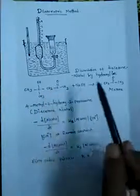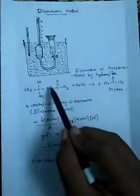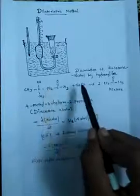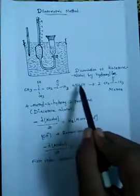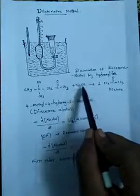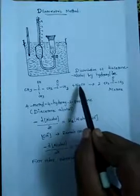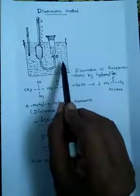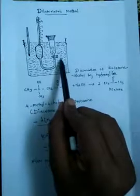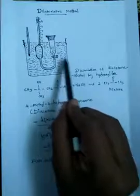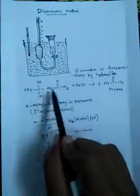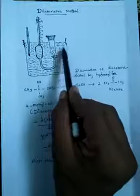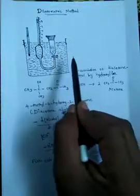We usually take about 100 ml of sodium ethoxide and 5 ml of diacetone alcohol. To perform this experiment, you take the diacetone alcohol and sodium ethoxide in separate vessels. Take the sodium ethoxide in a conical flask, then maintain constant temperature by keeping the conical flask in the bath to attain thermal equilibrium.